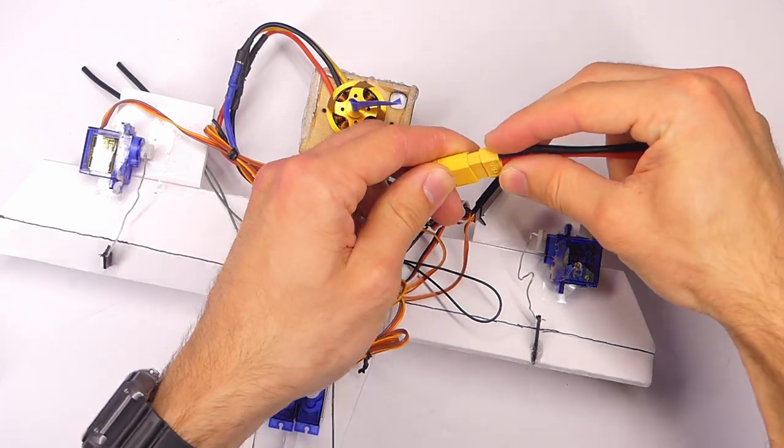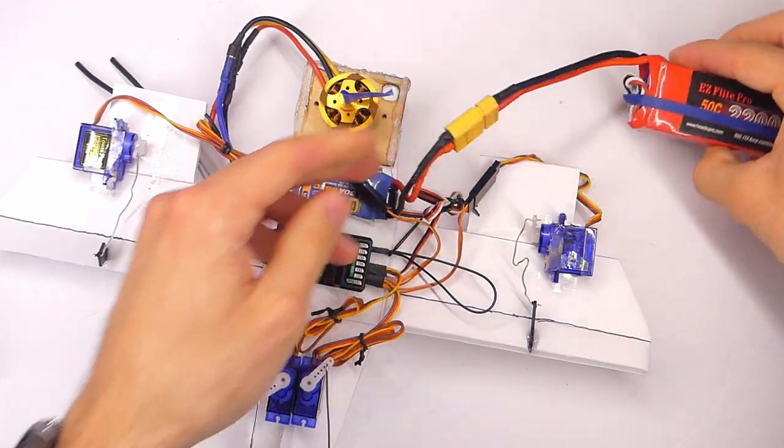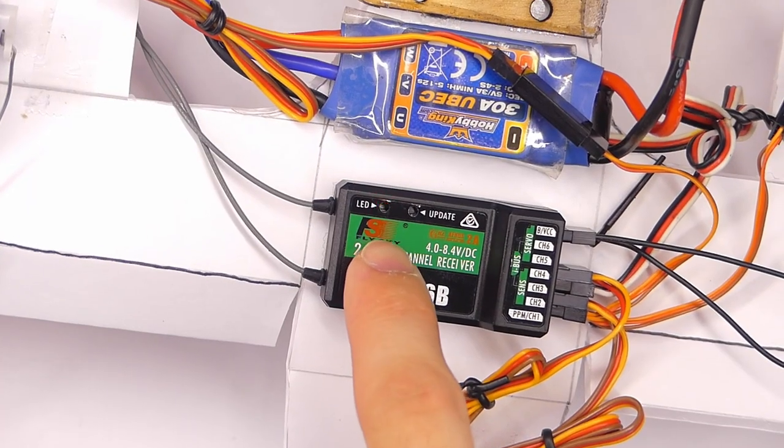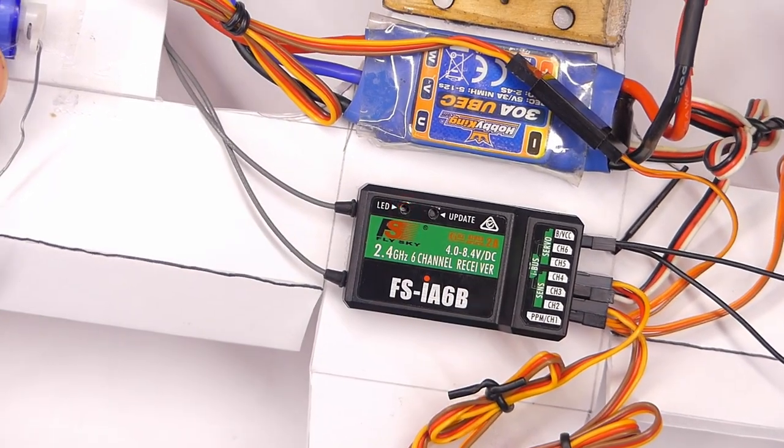So plug in your battery to your ESC. Now you can see the LED in our receiver is blinking very quickly.